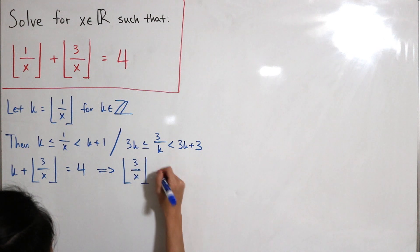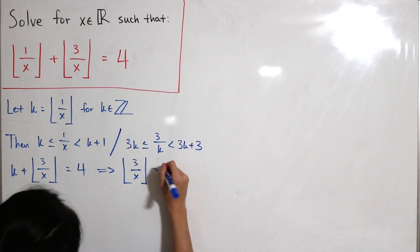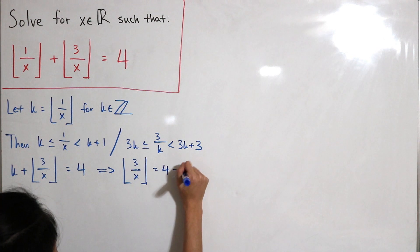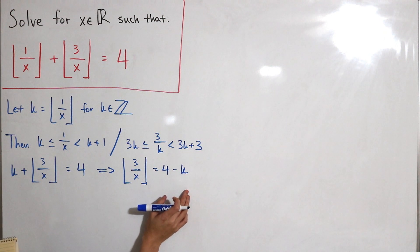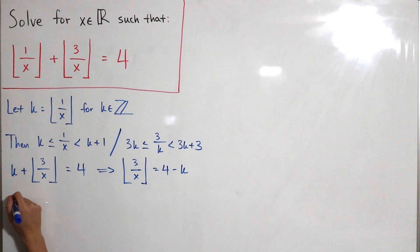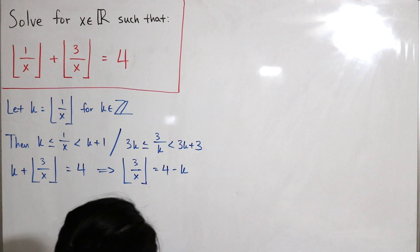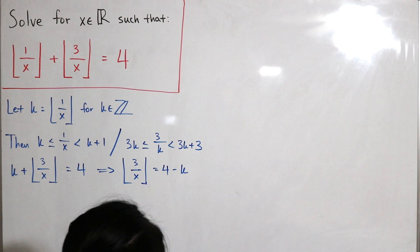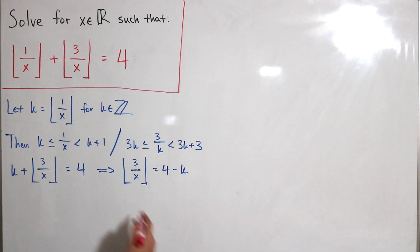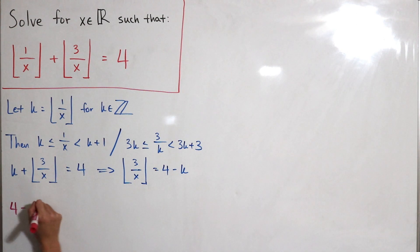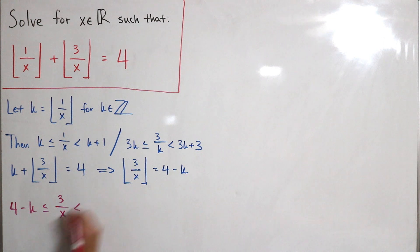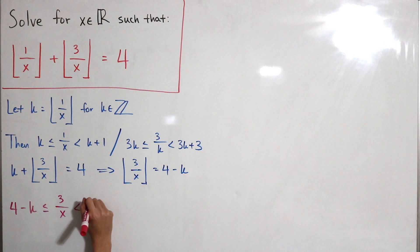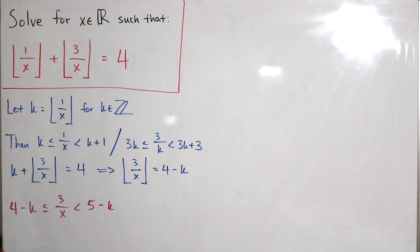Using this, we form an inequality. Since the floor of 3 over x equals 4 minus k, we have 4 minus k less than or equal to 3 over x, which is strictly less than 5 minus k.